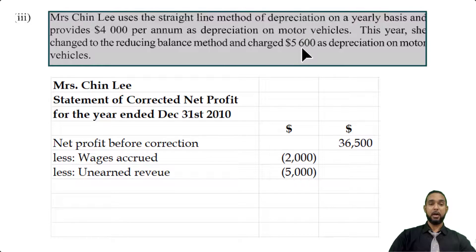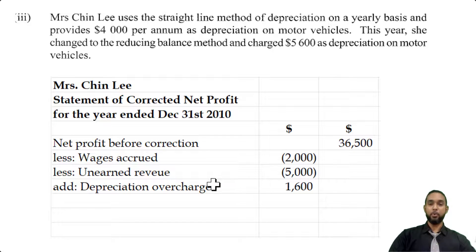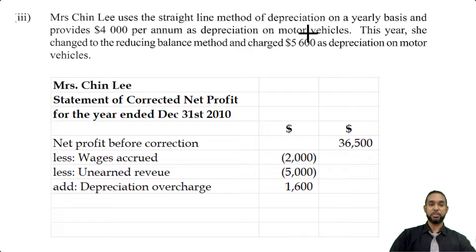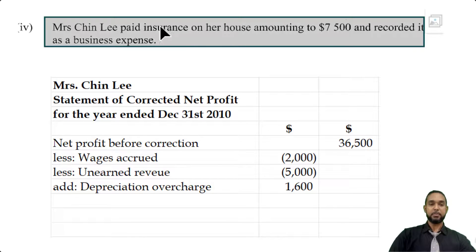Next, Mrs. Chinlee switched depreciation methods and ended up including a larger charge for depreciation than she normally would have. We need to undo that, so instead of adding back the five thousand six hundred and then subtracting the four thousand, we just add back one thousand six hundred — that was the overcharge for depreciation. You charged too much, so you add back the amount of the overcharge.